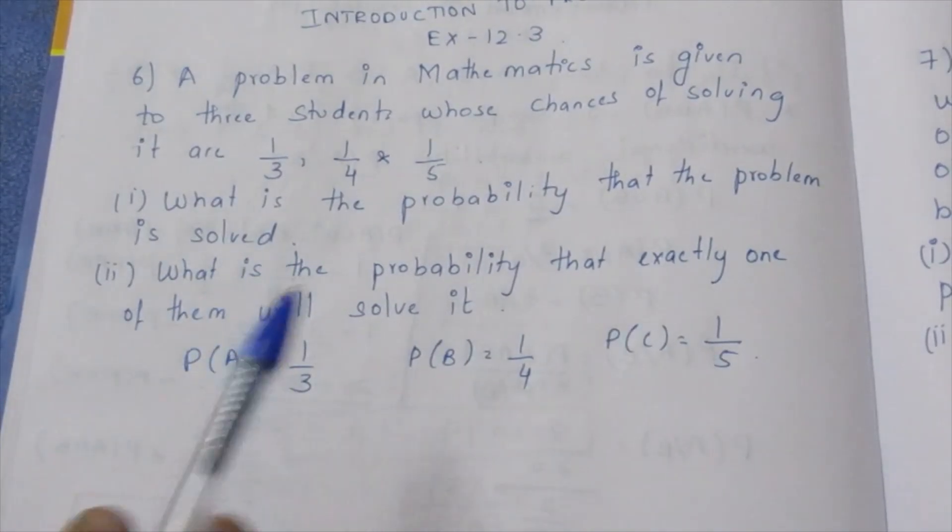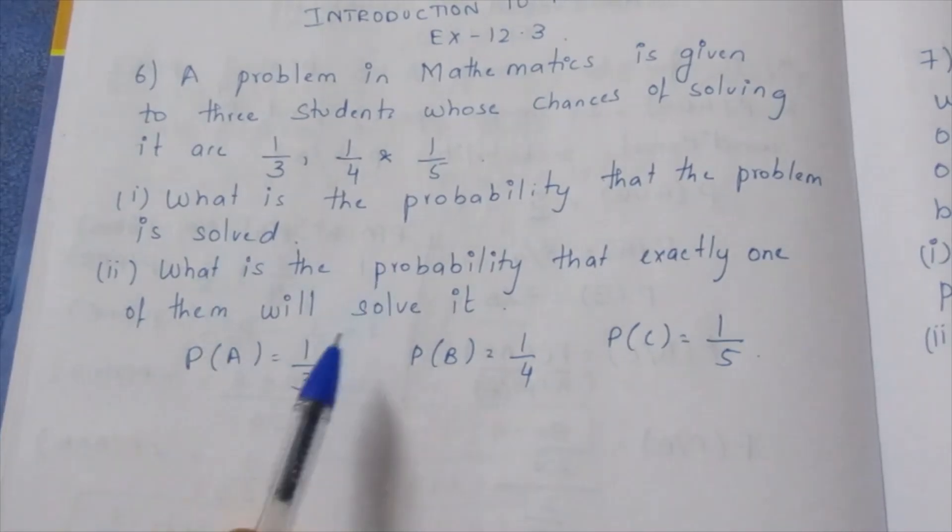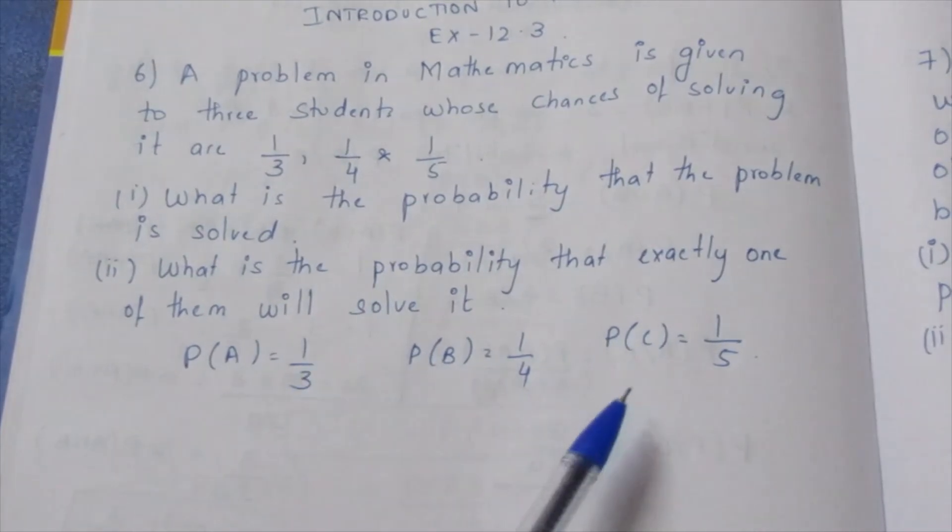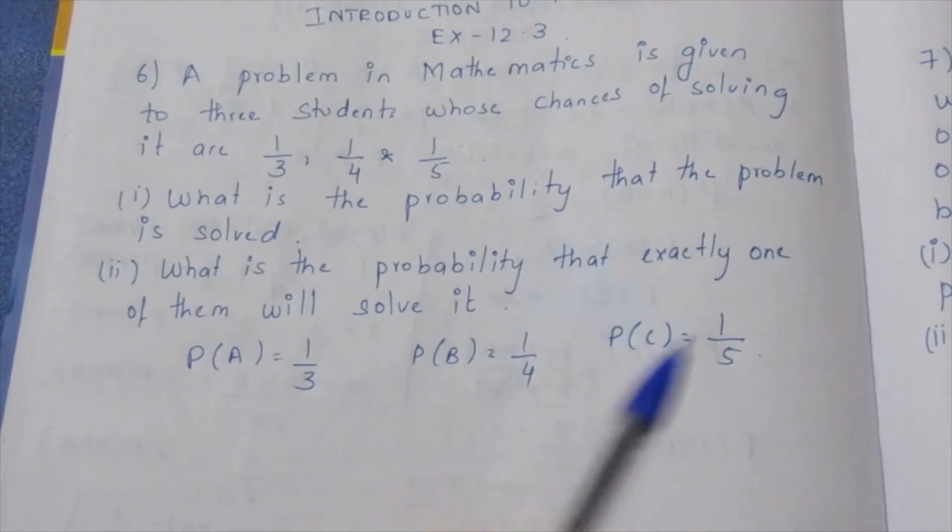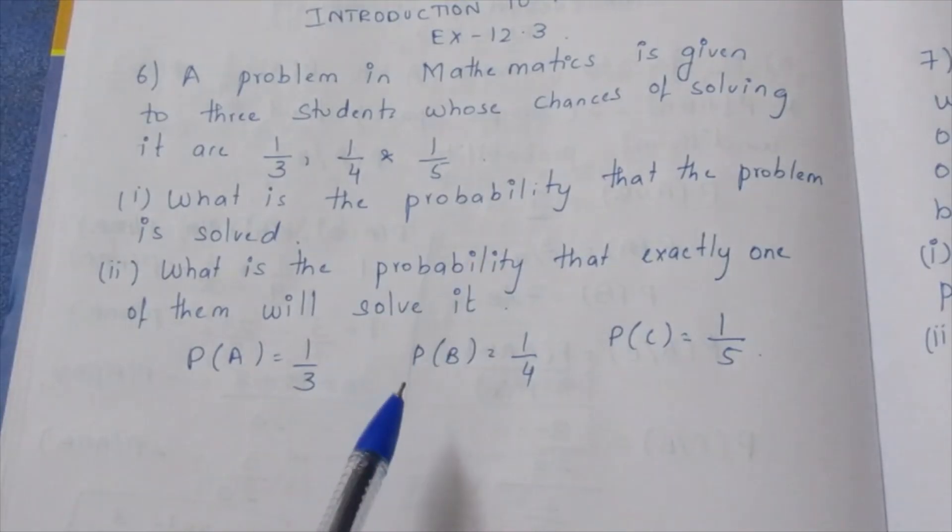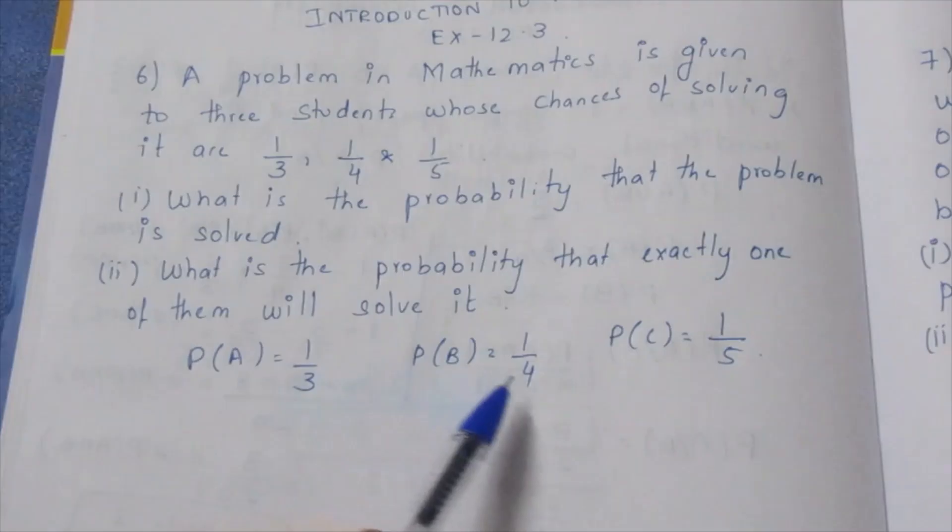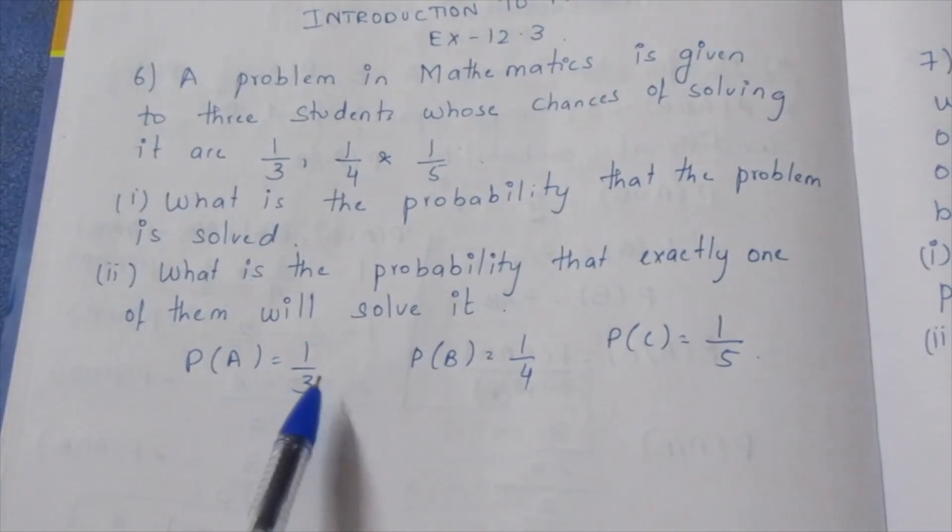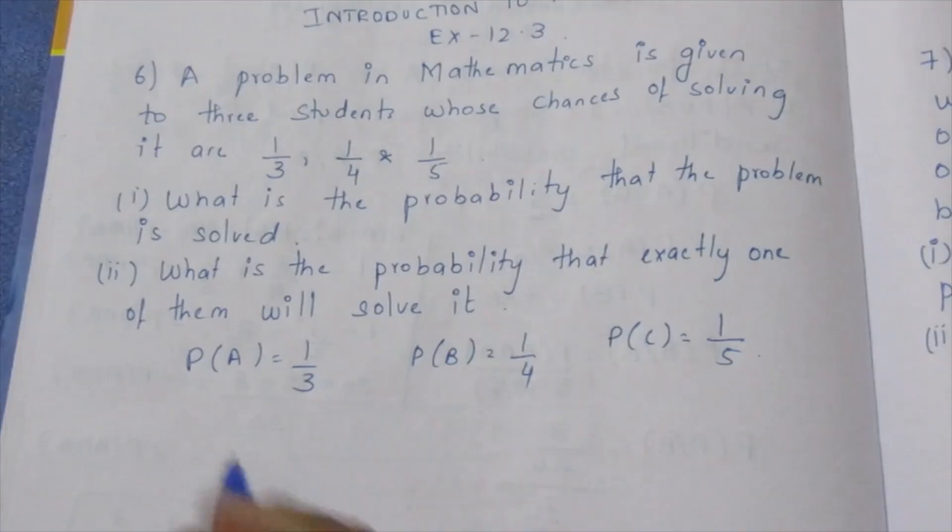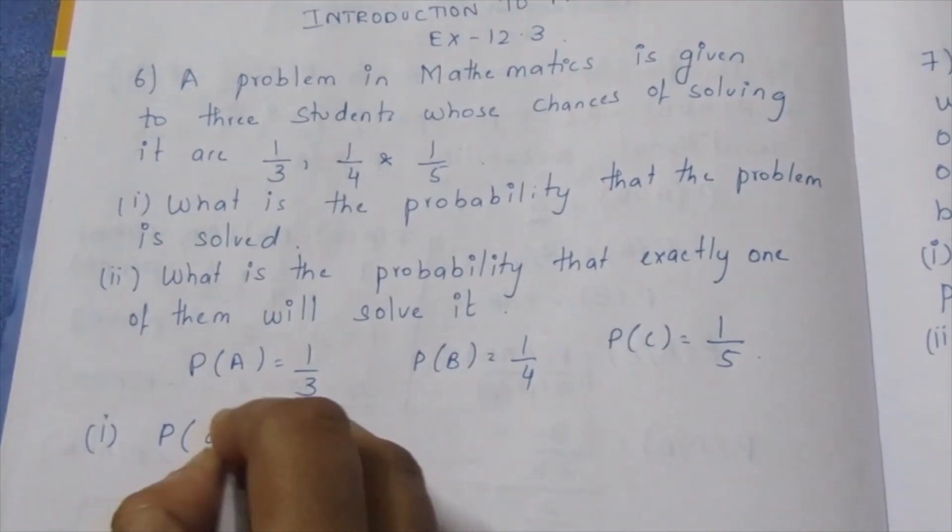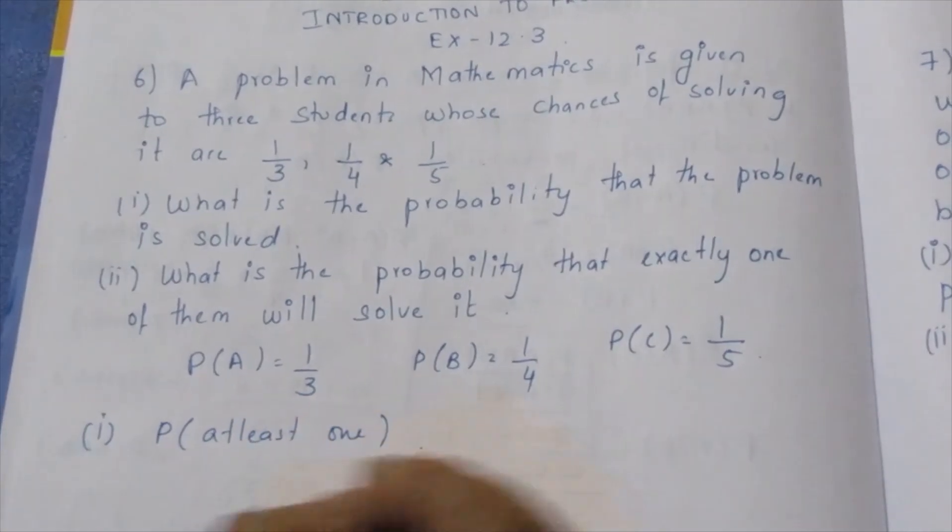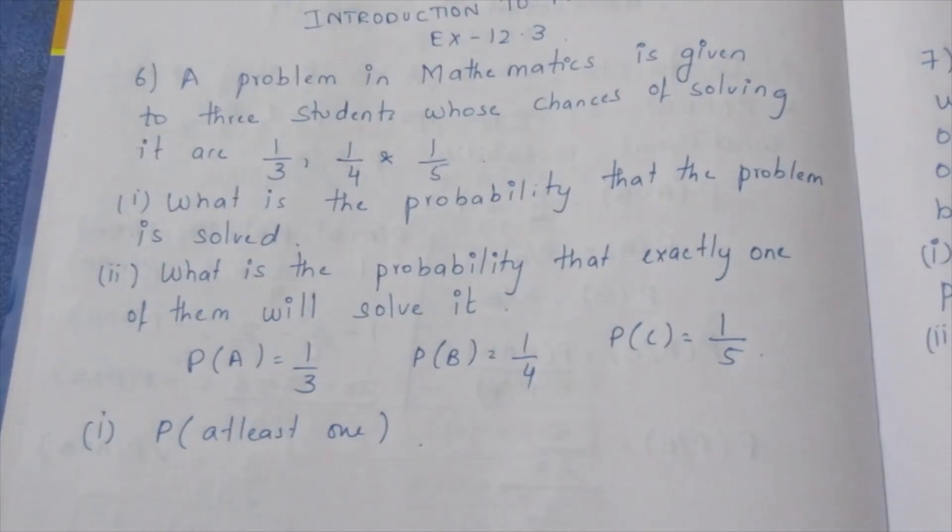What is the probability that at least one of them will solve the problem? The problem is that the problem is at least 1.